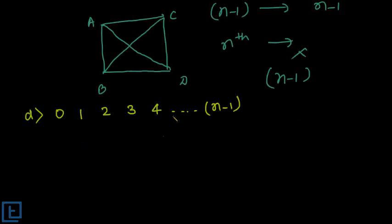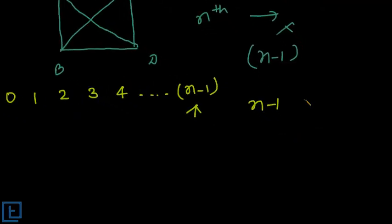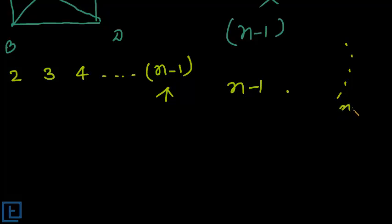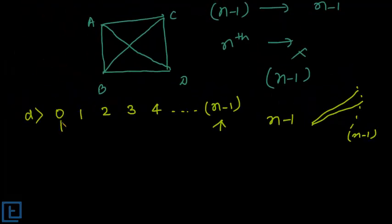Now check the next option, where n vertices have degrees 0, 1, 2, 3, up to n minus 1. The last vertex has degree n minus 1, meaning it is connected to all remaining n minus 1 vertices. But if one vertex is connected to every other vertex, no other vertex can have degree zero. Here we have both degree zero and degree n minus 1 in the same graph, which is a contradiction. So both zero and n minus 1 cannot appear together, and this option is also wrong.